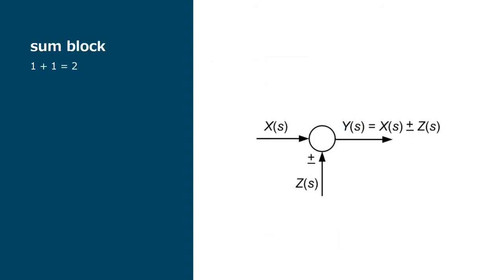The next case requires the definition of the sum block, which output is the sum of the input signals. By omission, these signals are summed positively, so we do not need to represent the plus sign on it. If we have a negative input, we put a negative sign beside the corresponding arrow.